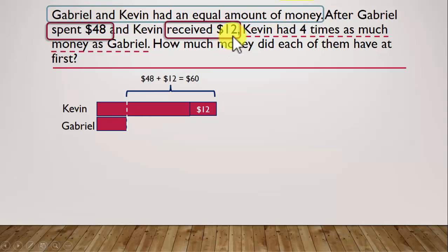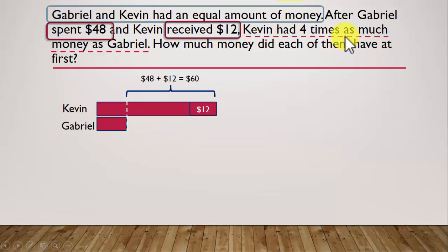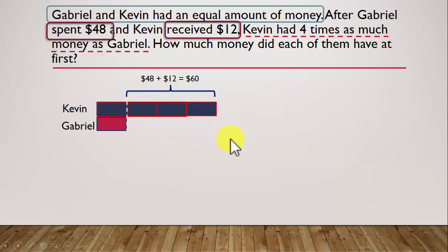After all this happened, Kevin had four times as much money as Gabriel. As usual, Gabriel comes after 'as much money as,' so Gabriel is our reference. Whatever Gabriel has will be taken as one unit, and Kevin has four times as much, so Kevin should have four units. So Gabriel's one unit is this size, Kevin's one unit is also this size, and the remaining has to be split into three of the same size.